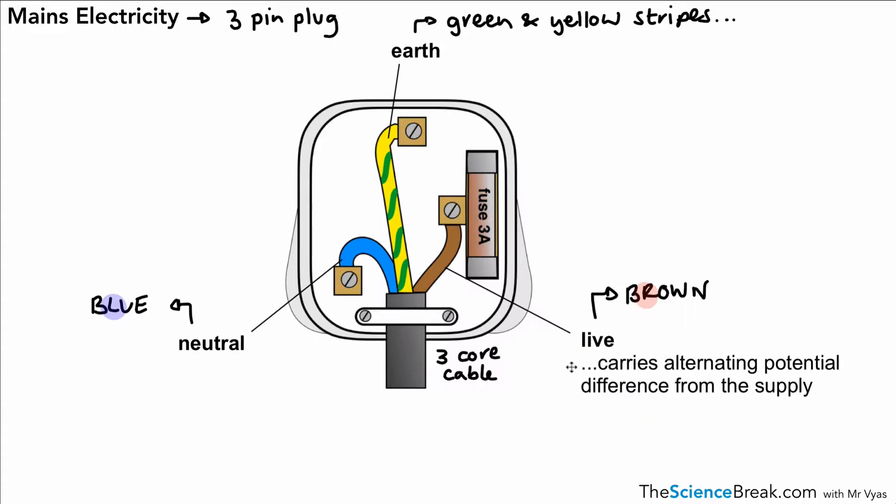The live wire carries alternating potential difference from the supply, as we just discussed. The neutral wire actually completes the circuit. So we have an appliance and the neutral wire will complete the circuit to that appliance. So, for example, imagine we had a kettle.